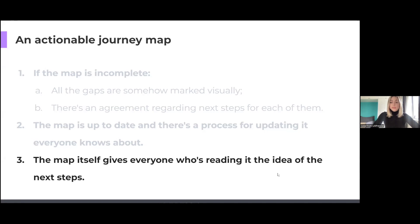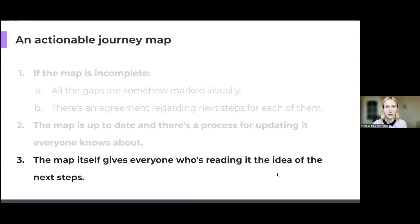The third case when your journey map can be actionable is when the map itself gives everyone who's reviewed it the idea of next steps. So, besides all the problems and barriers that you were discussing, there's also a list of ideas, opportunities, or solutions. The map itself is a sort of to-do list telling others what will happen next and who is responsible for that. If your journey map checks any of these three boxes — congratulations, your journey map is actionable. And you can actually use it to improve your UX and CX.